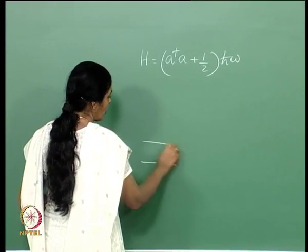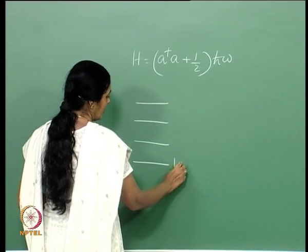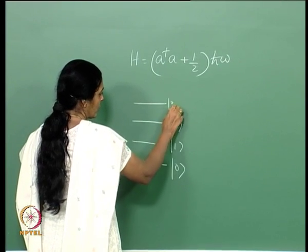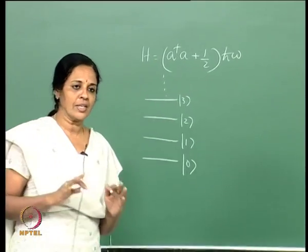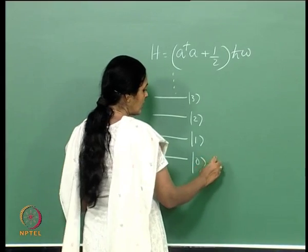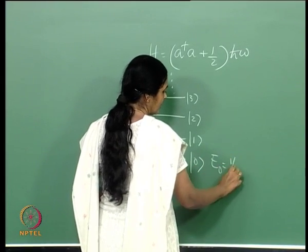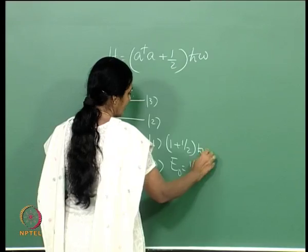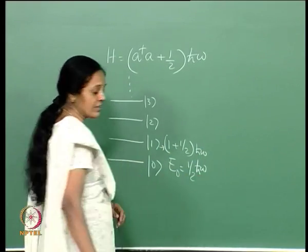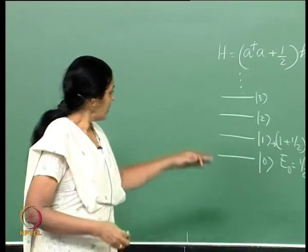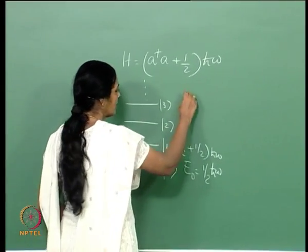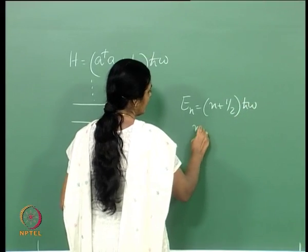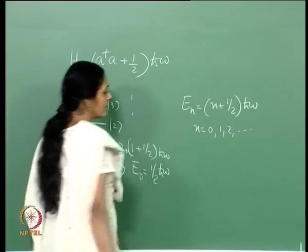The energy levels of the oscillator were equally spaced. The notation used: the ground state was ket 0, the first excited state was ket 1, and so on — an infinite set of energy levels. The energy itself was given by E naught equal to half h-cross omega, which is a zero-point energy. Then E1 is 1 plus half h-cross omega, and in general E_n is n plus half h-cross omega, with n taking values 0, 1, 2, 3.